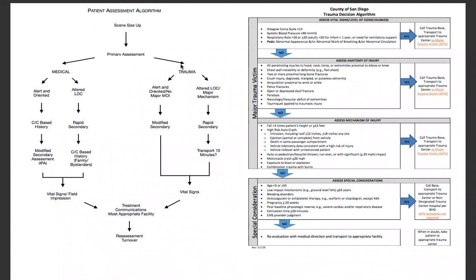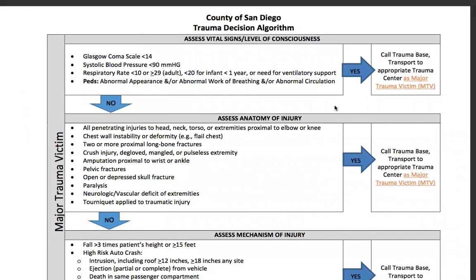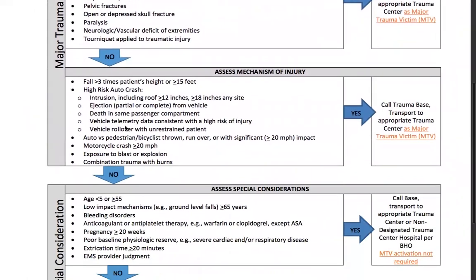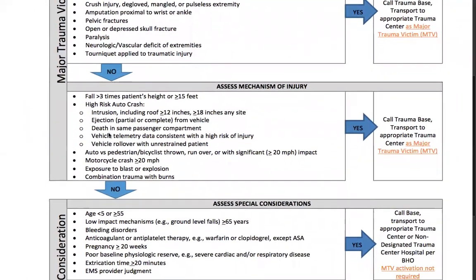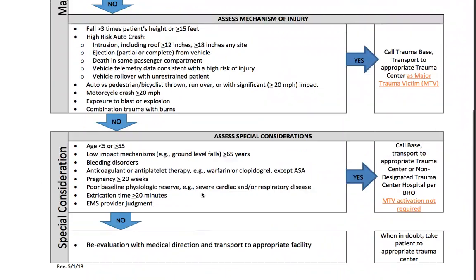Starting with the algorithm: our trauma assessments for the class teach you how to do a trauma assessment on somebody who has experienced a major mechanism, and that'll lead to a rapid secondary. This is straight out of the protocol books — T460A, found in the policy reference section. Any altered vital signs or LOC with the following criteria creates a protocol for a major trauma victim. If any of these criteria are met, they need to be declared a major trauma, taken to a trauma facility, and you will be doing a rapid secondary assessment. There are also some special considerations.